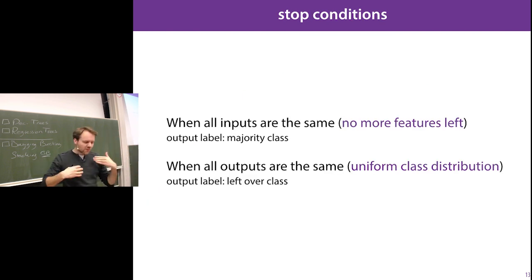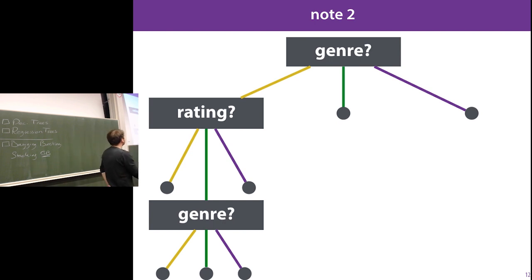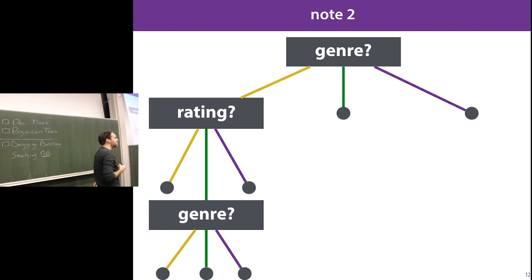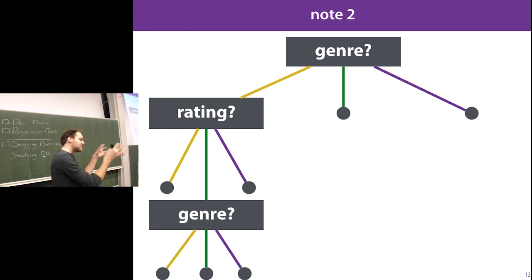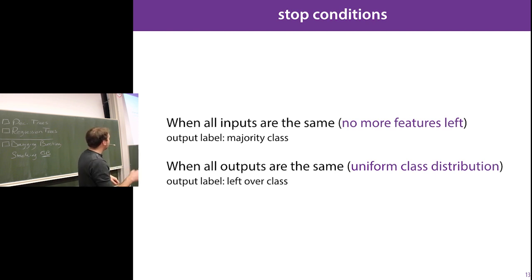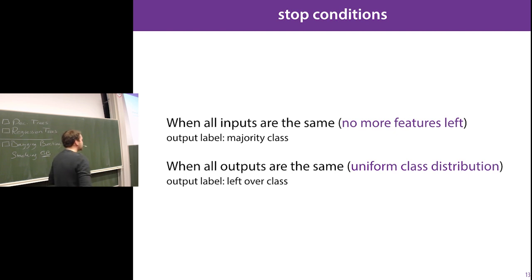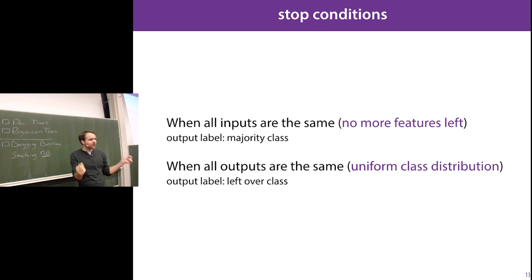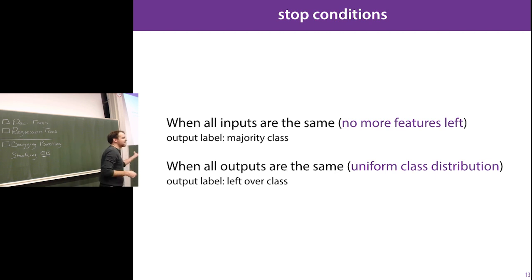The stop conditions are: first, when we've used all the features — with three features the tree can only be three levels deep. Second, when all instances in a segment have the same inputs. Third, when all the outputs in a segment are the same class. In all these cases, we label the leaf with the majority class of the segment.